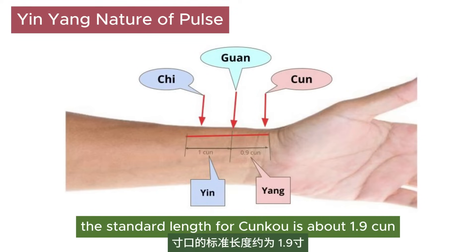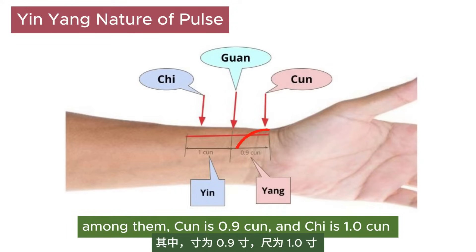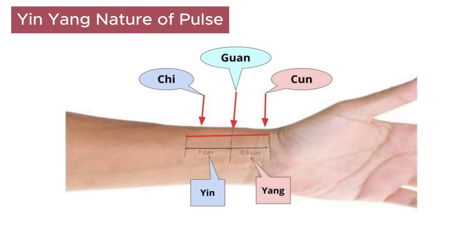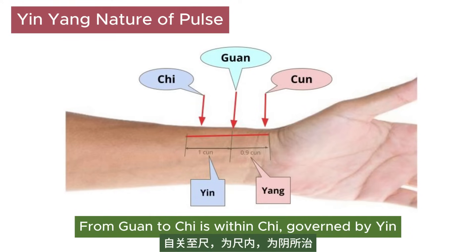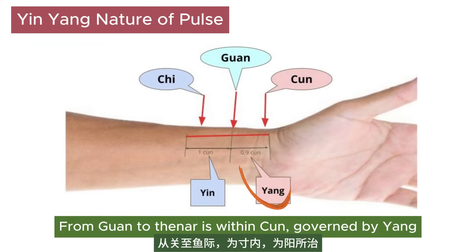The standard length for wengkou is about 1.9 cun. Among them, cun is 0.9 cun and chi is 1.0 cun. According to the Classic on Medical Problems, from guan to chi is within chi, governed by yin. From guan to thinner is within cun, governed by yang.